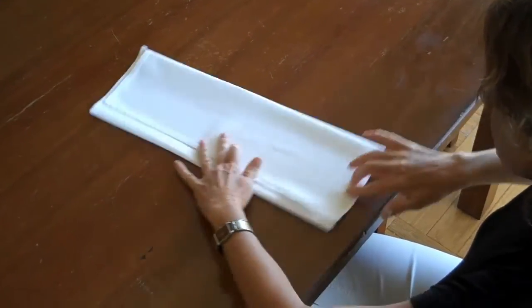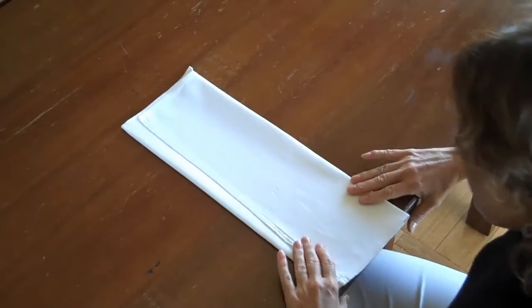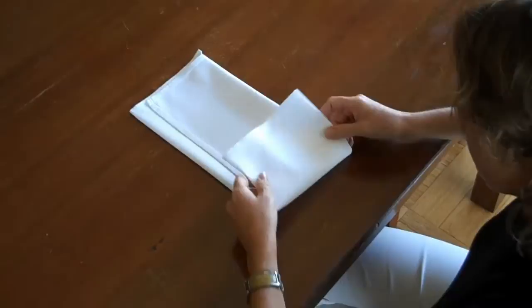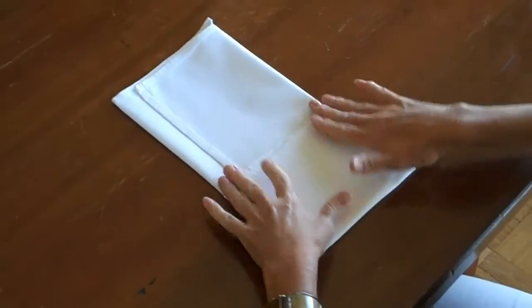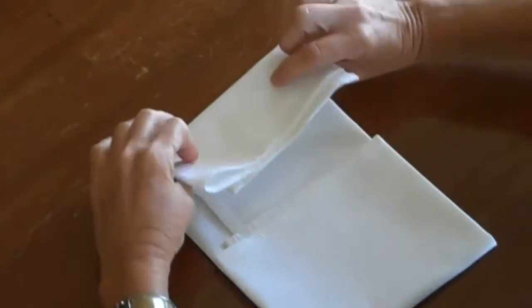Then we'll take the napkin and we're going to fold it into half. So take your bottom, bring it to the center, and bring your top down to the center.